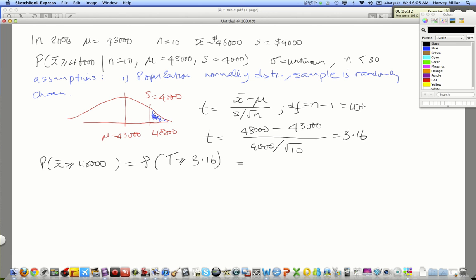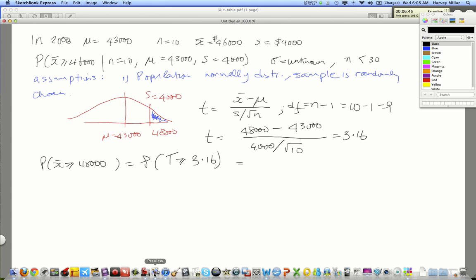So, we have 9 degrees of freedom and a t value of 3.16. So, we go to the table, and let's see, I have a table here. So, if we look at the table, 9 degrees of freedom is right here. And we're looking for 3.16. Well, 3.16 cannot be found exactly.